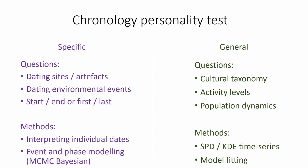First I want to ask you to give yourselves a kind of personality test: what do you think is more important — what is chronology all about? Two very separate themes are talked about when we discuss chronology. There are people interested in addressing specific problems, using all the tools at our disposal to answer specific questions as well as we possibly can — dating sites, working out when particular artifacts came into being, when certain events happened in environmental sequences, when was the end of the Bronze Age, or when did the Neolithic first arrive somewhere. To do that we need high-quality data, fantastic samples, and we need to model their sequence and stratigraphy using Bayesian methods.